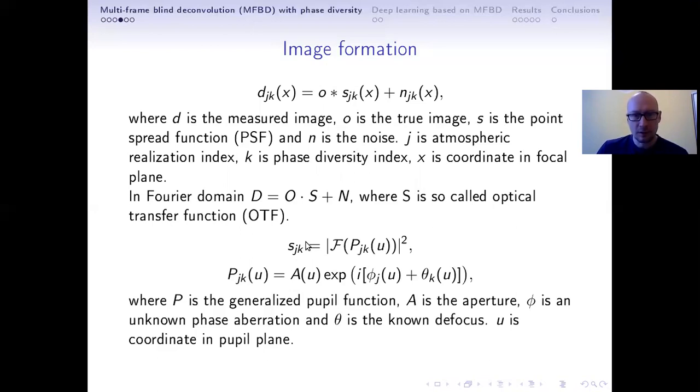The point spread function itself can be expressed via so-called generalized pupil function, which is just a product of the aperture of the telescope and then the exponential factor which involves the phase aberration. We also call it basically the wave front. And this is where the unknown part comes in from. And we have also this diversity term, which is known to us.